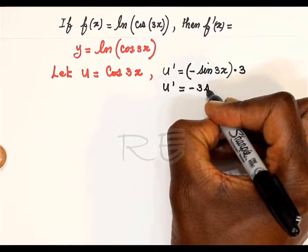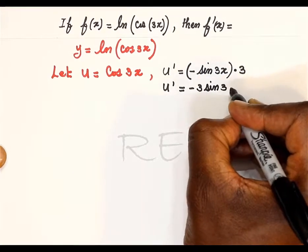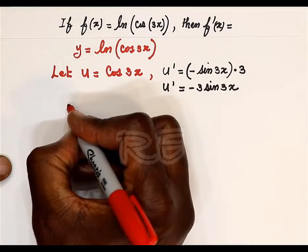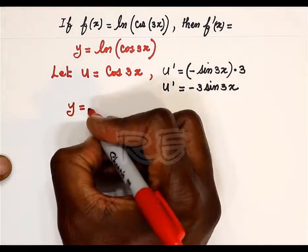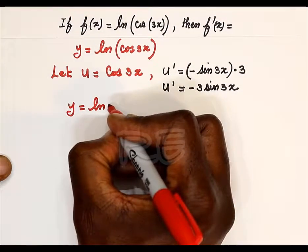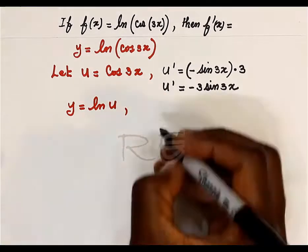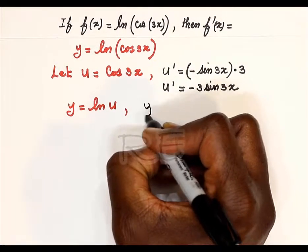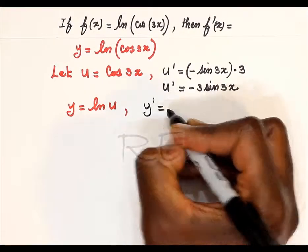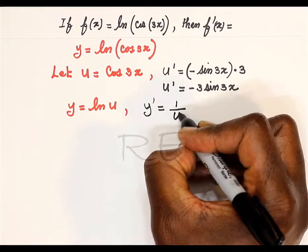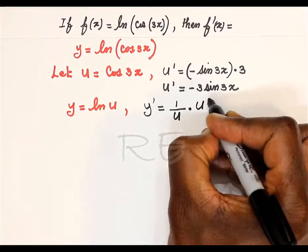u prime is equal to negative 3 sine 3x. y is equal to ln(u). y prime is equal to 1 over u multiplied by u prime.